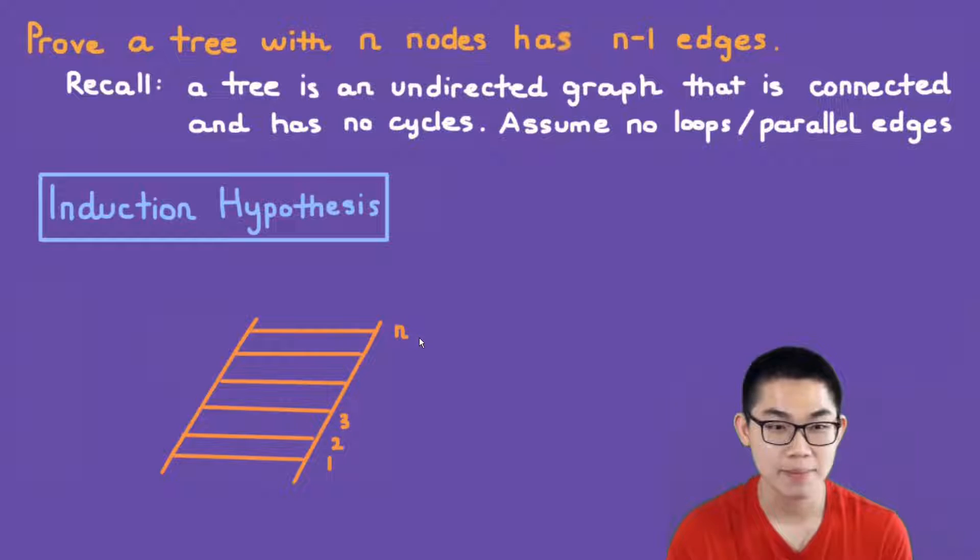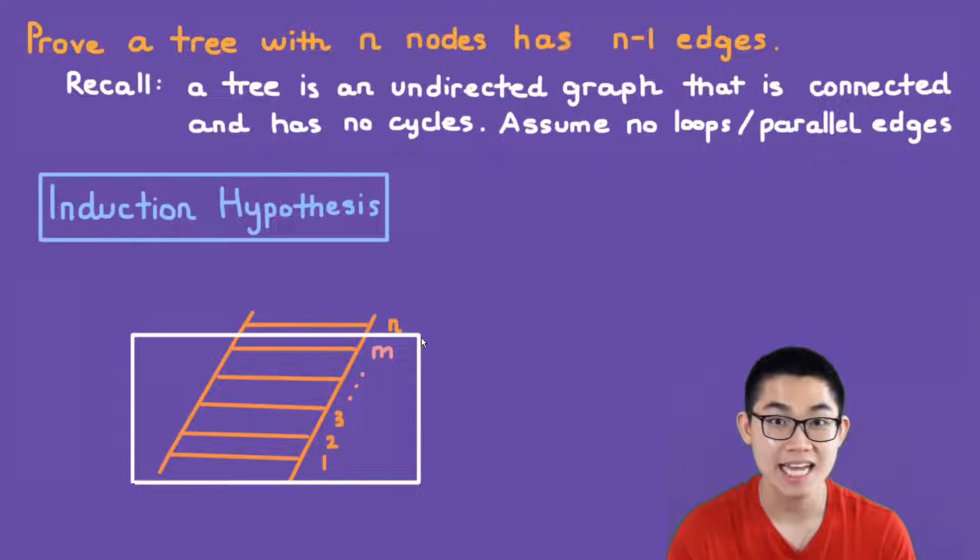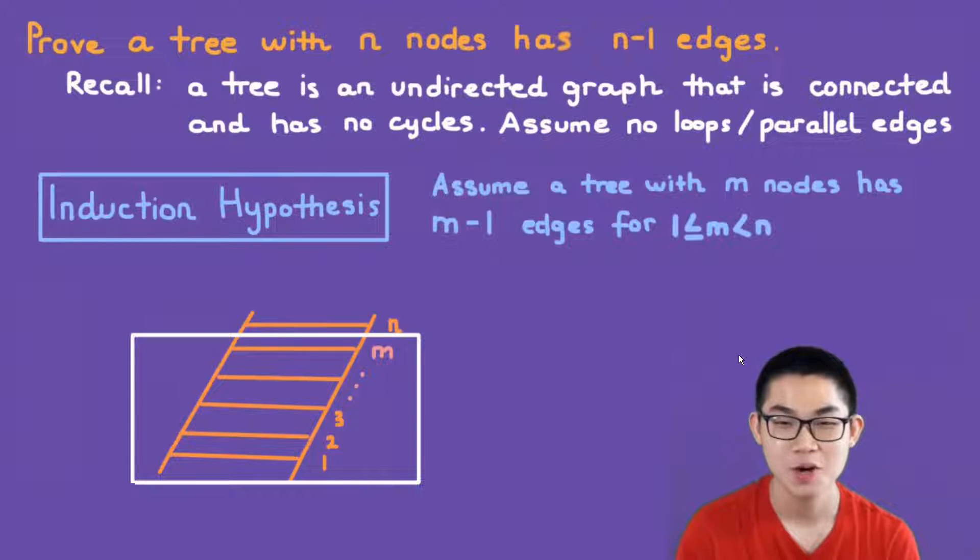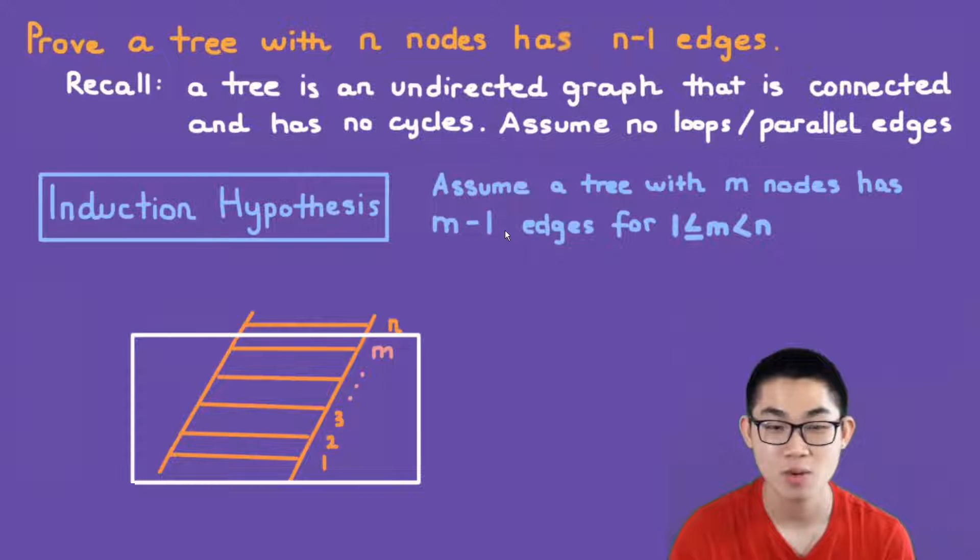What the induction hypothesis does is it just says let's just assume that the statement is true when n is equal to 1, 2, and 3 up until m. Right? Let's just assume that the statement is true inside this range. So assume that a tree with m nodes has m minus 1 edges when m is between 1 and n. So notice that m is strictly smaller than n.